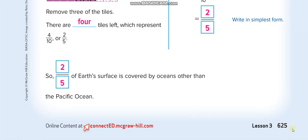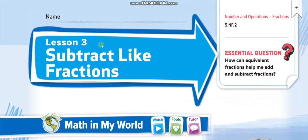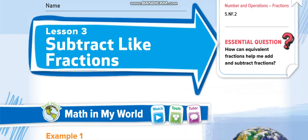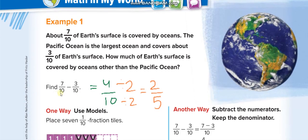This lesson is just like the last one, but here instead of addition we are doing subtraction of like fractions. When the denominators are the same, we call them like fractions. When we subtract like fractions, we just subtract the numerators and the denominators stay the same. For example: 7 minus 3 gives 4 over 10, then we simplify — divide by 2 up and down — so 4 divided by 2 is 2, and 10 divided by 2 is 5, giving 2 over 5.